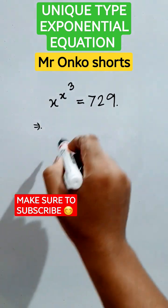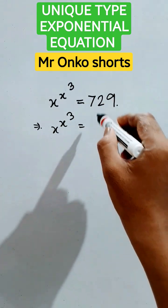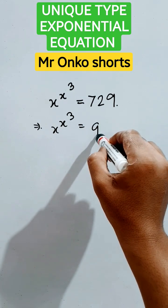So, first of all, let's learn the trick to solve this. x to the power x to the power 3 is equals to 729, that is 9 cube.